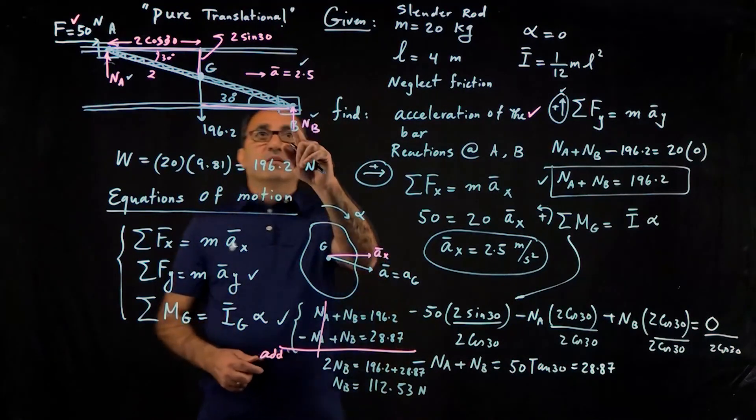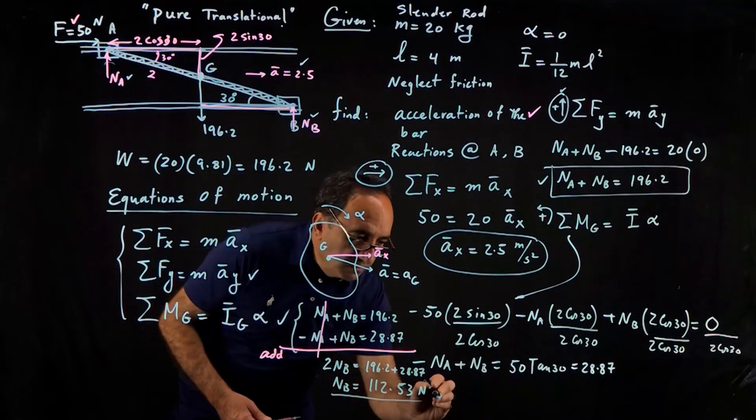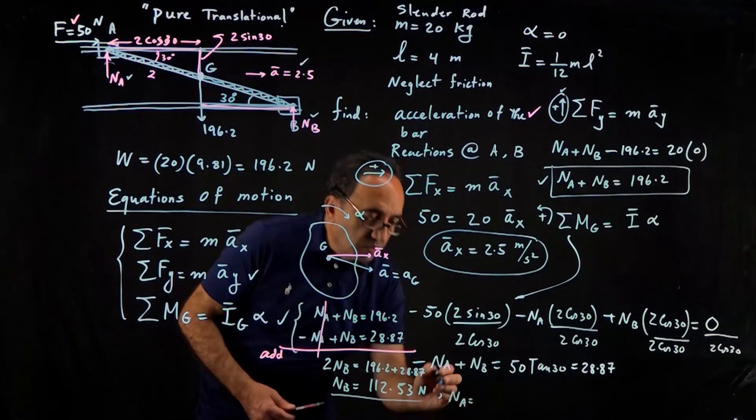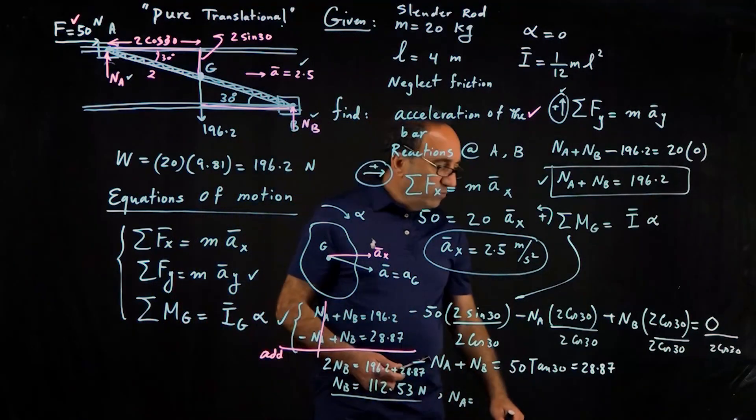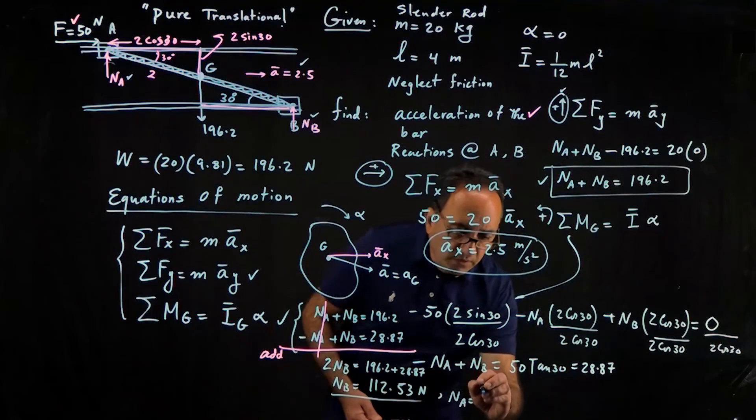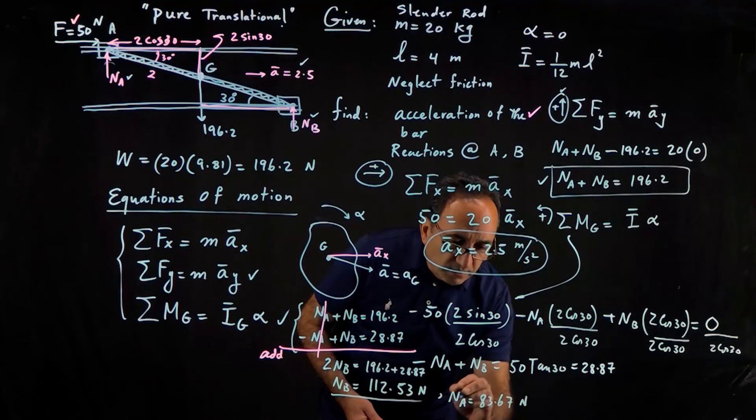And then similarly, na can be determined by just subtracting this from 196.2. Because remember, the sum has to be equal to the weight. So that will leave us at 83.67 newton at b.